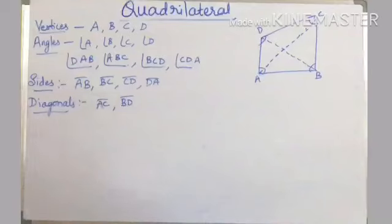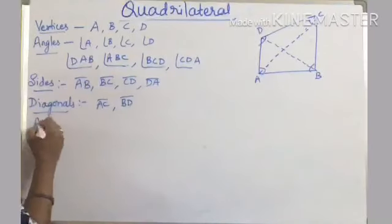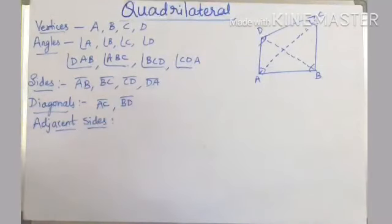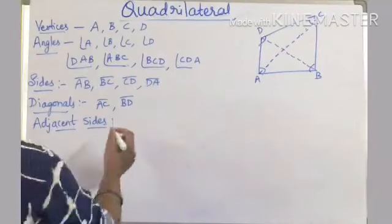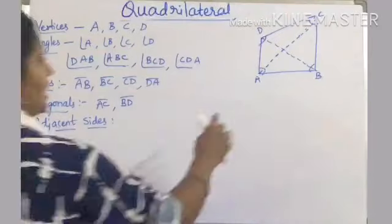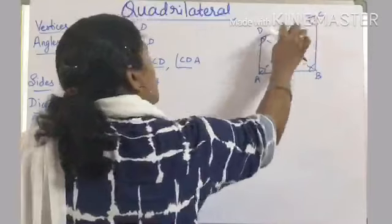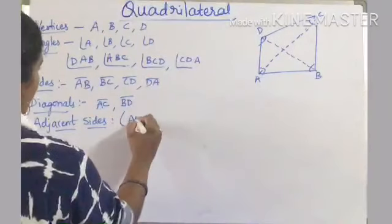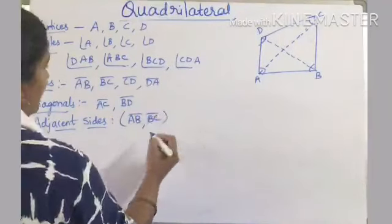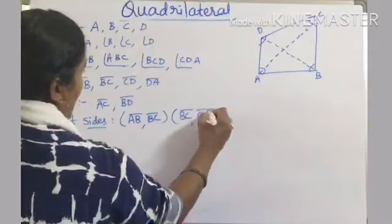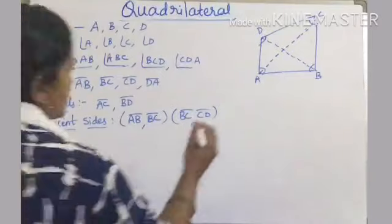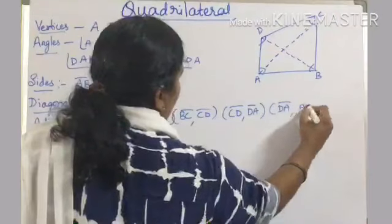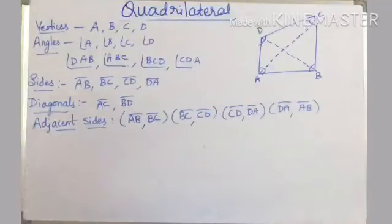Adjacent means side by side, having a common vertex. We get four pairs of adjacent sides: AB is adjacent to BC, BC is adjacent to CD, CD is adjacent to DA, and DA is adjacent to AB.